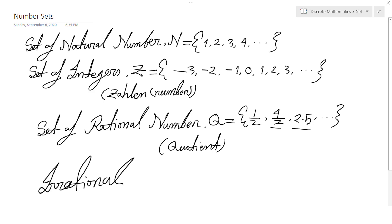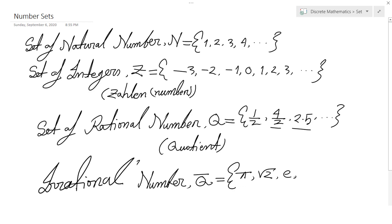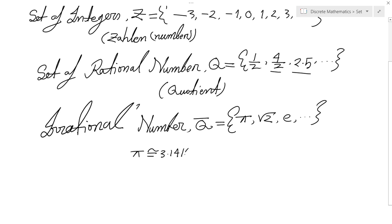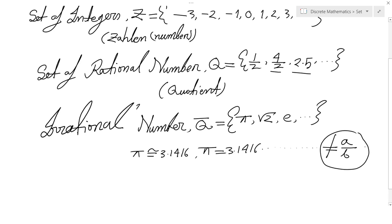The number that cannot be expressed as a ratio is an irrational number. The set of irrational numbers is expressed using Q-bar. The elements are numbers that cannot be expressed as a ratio, such as pi, root 2, Euler's number, and so on. Pi is approximately 3.1416, but actually it keeps going on and on — you cannot express it as a ratio of two numbers. That is why it is an irrational number. Whenever we cannot express a number as a over b or in decimal point, we call it an irrational number.